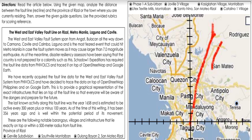The West and East Valley Fault Line on Rizal, Metro Manila, Laguna, and Cavite. The West and East Valley Fault System spans from Angat, Bulacan all the way down to Carmona, Cavite, and Comba, Laguna, and is the most feared event that could hit Metro Manila, as it may cause a larger than 7.0 magnitude earthquake.